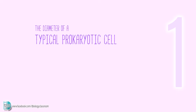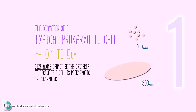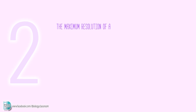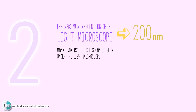The diameter of a typical prokaryotic cell ranges between 0.1 to 5 micrometers. However, some bacteria can be as small as 100 nanometers, and some giant bacteria can be as large as 300 micrometers. So size alone cannot be the criteria to decide if a cell is prokaryotic or eukaryotic. Since the maximum resolution of a light microscope is 200 nanometers, many prokaryotic cells can be seen under the light microscope as they are larger than 200 nanometers.